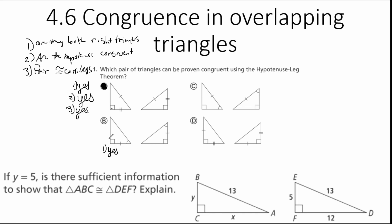Now let's look at why B, C, and D are not the correct answer. For B, the first question is satisfied — these are both right triangles, yes. But I don't know anything about the hypotenuse of either triangle, so I cannot determine if they're congruent. I'm going to put 'cannot determine' and move on to C.